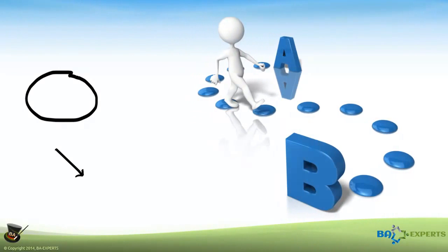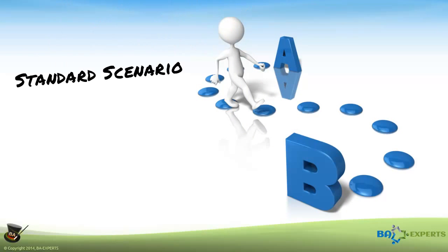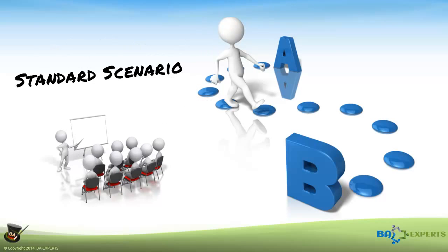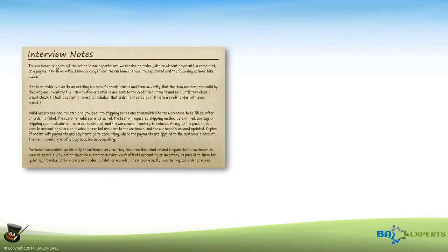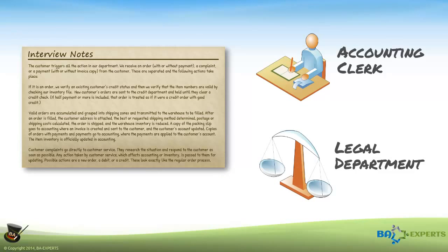Now that you know the symbols for creating a rigorous physical process model, I'd like to walk you through the exercise of analyzing a situation to create one using a standard scenario from our instructor-led class. We'll use a transcript of an interview with the manager of the order entry department, Mary, the project sponsor. My approach is to read the text and look for people and places that I want to represent in my diagram. I'll try my best to identify all of them, but don't have to be perfect as this is my first cut edit.